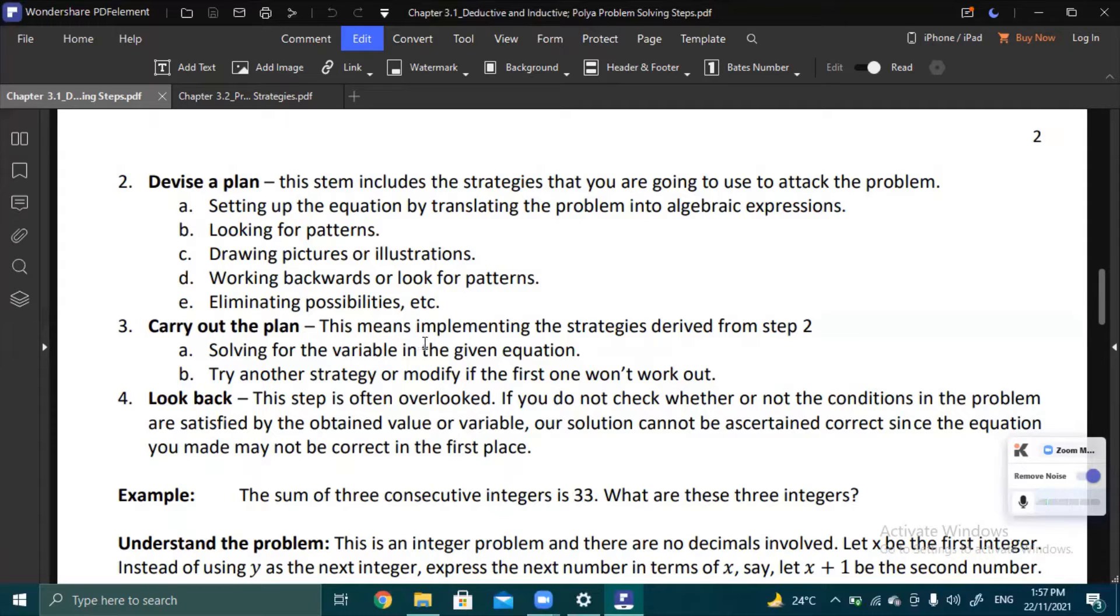The next step is you carry out the plan, or what we call the solution part. In the plan, you laid out the formula. Here, you can solve the variable in the equation. If it doesn't work with the first solution, you can try another strategy or way.